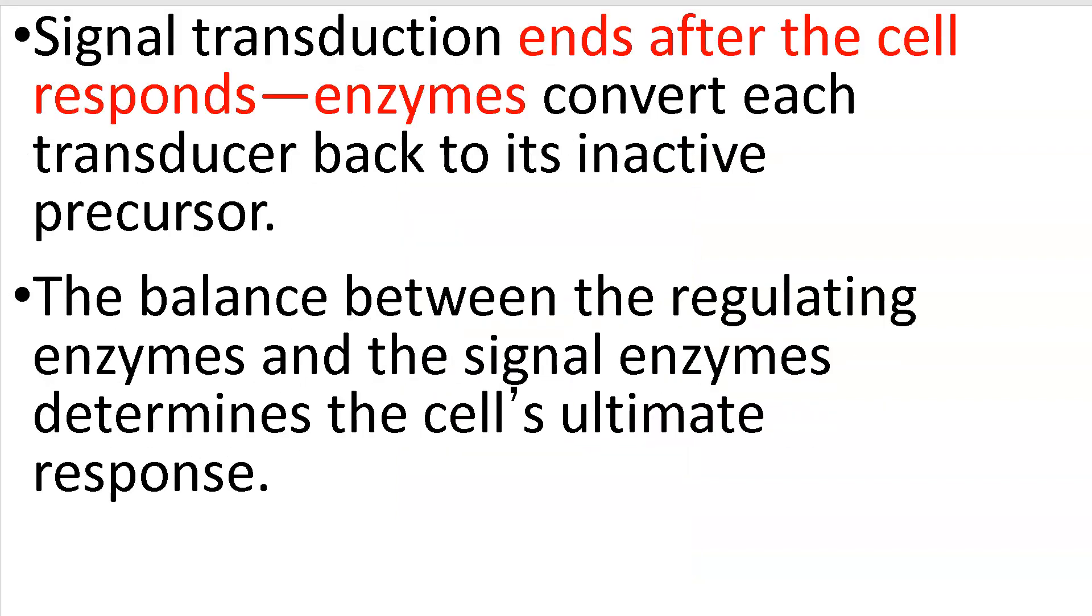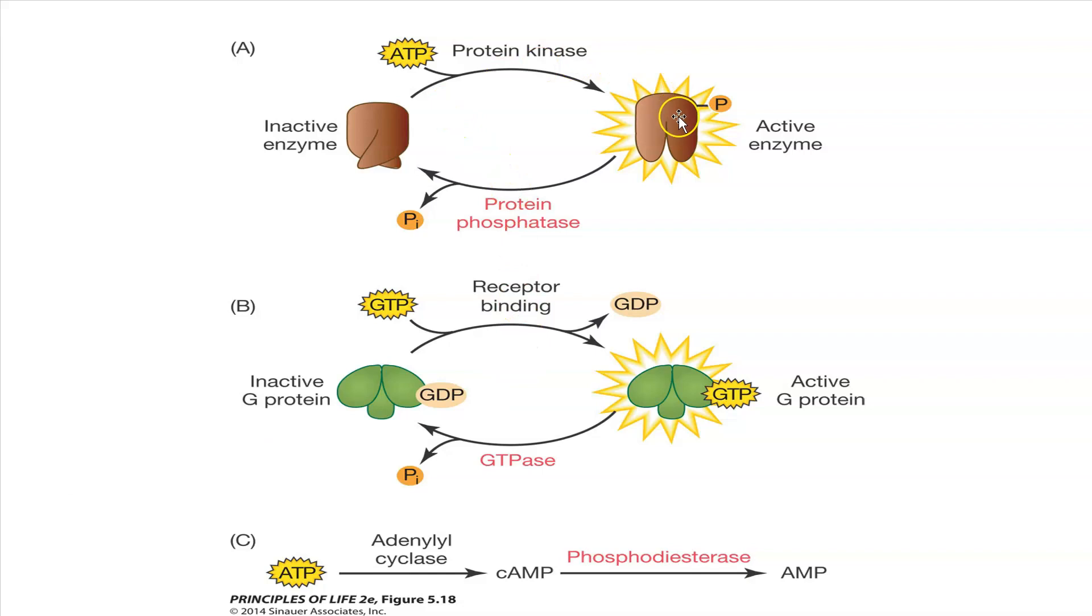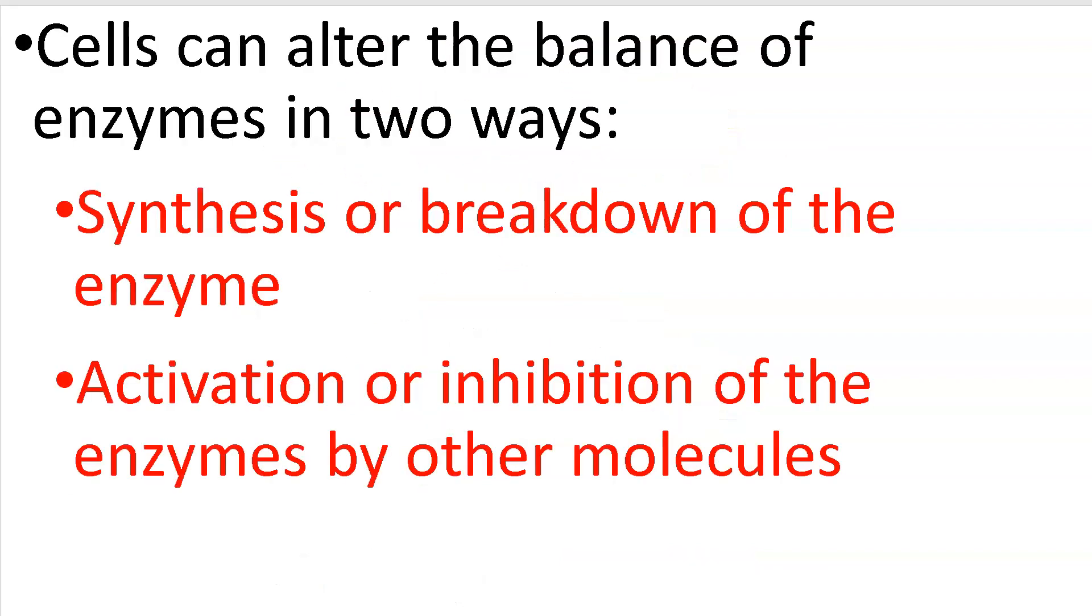So signal transduction ends after the cell responds. So enzymes convert transducers back to their inactive precursor. So again, we're maintaining balance. This is all about homeostasis, being able to respond to the world around us. And this is just, it's a cycle, active, inactive, active, inactive. So cells can alter the balance of enzymes in two ways. This is just like a wrap up, very broad view summary. We can either make or break down the enzyme or we can activate or inhibit the enzymes by other molecules. So in many ways, signal transduction involves enzymes. And so we can either make or break down or we can activate or inhibit the enzymes, activation or inhibition of the enzymes.